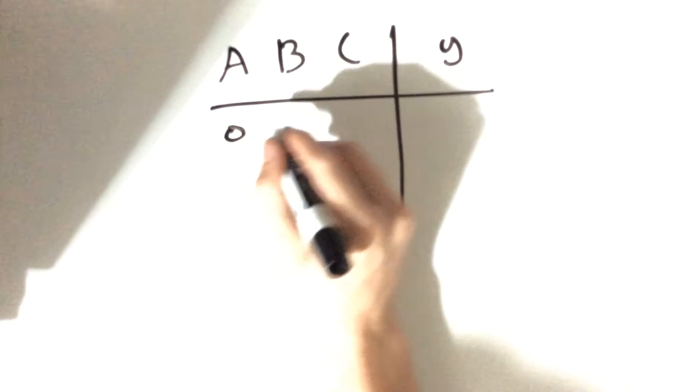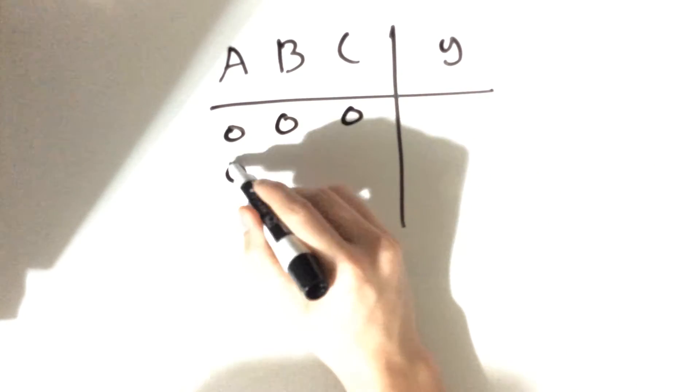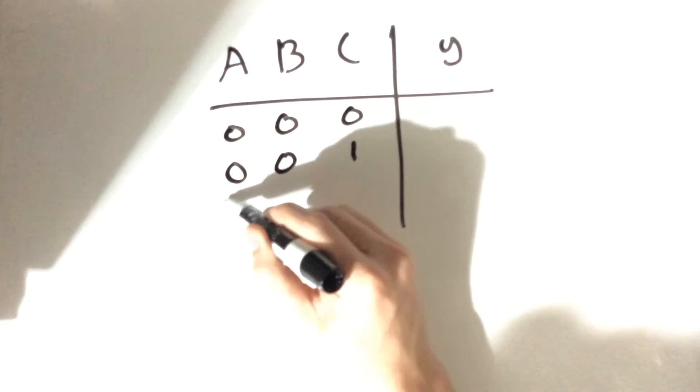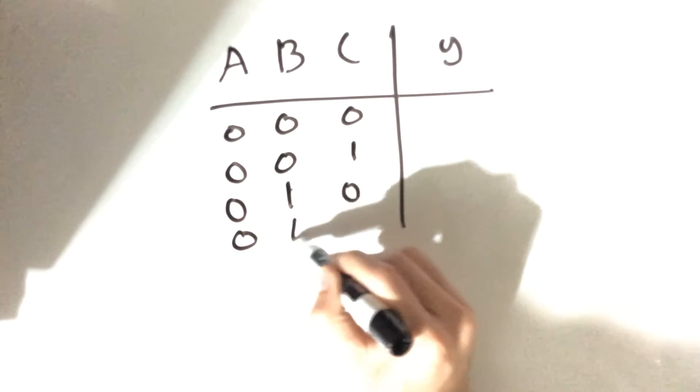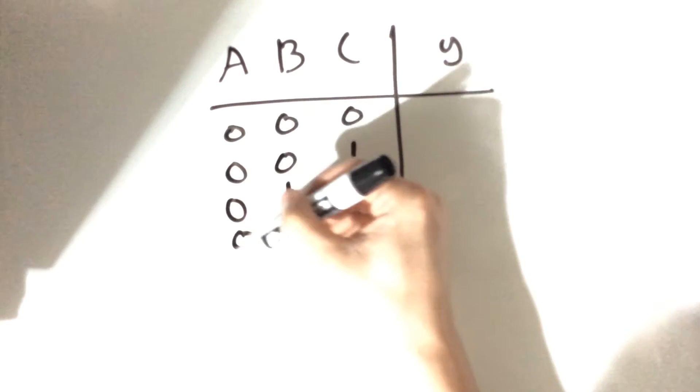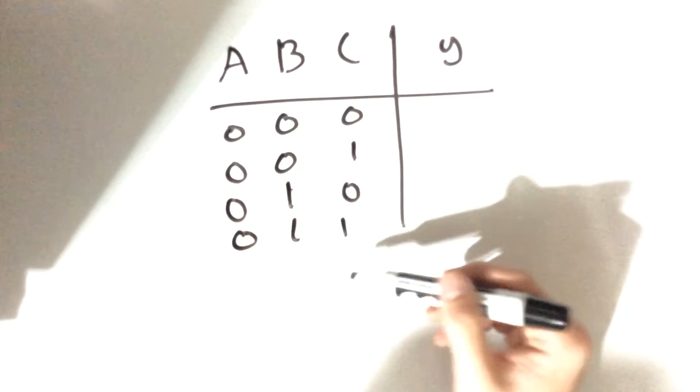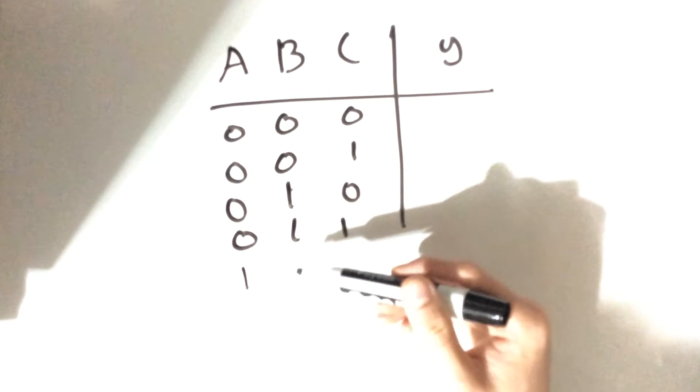Now all possible values: 0, 0, 0. Here's how I like to do this. We have 0, 0, 0; 0, 0, 1.